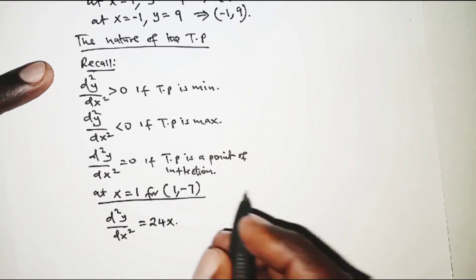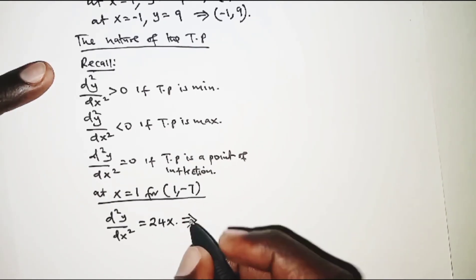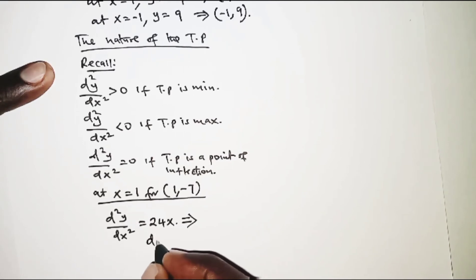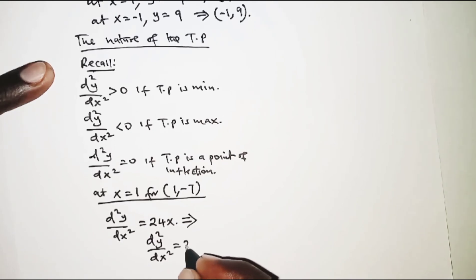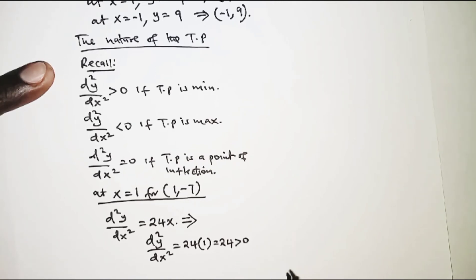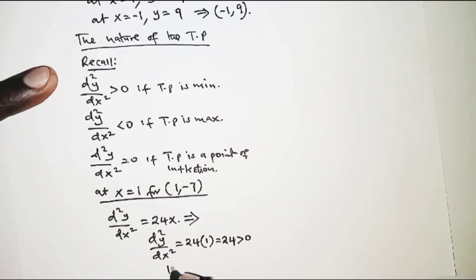The next thing is to substitute the values of x. For this point, the second derivative equals 24 multiplied by 1, which is positive 24. Since positive 24 is greater than 0, we can confirm that (1, -7) is a minimum point.